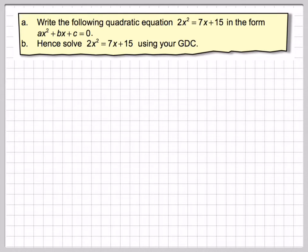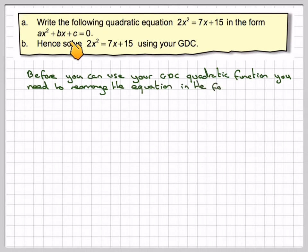So what we're going to do is first of all, we'll just do the first bit. Before you can use the GDC quadratic function, it needs to be in this format: ax squared plus bx plus c is equal to 0. So let's just do that first.